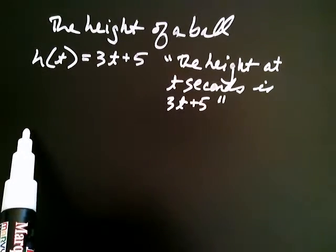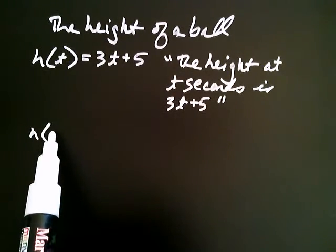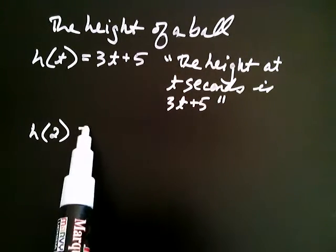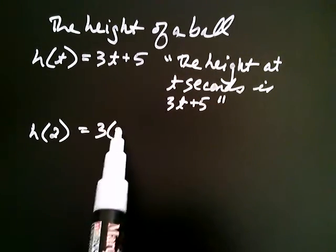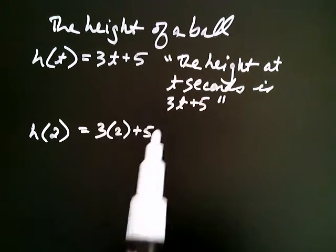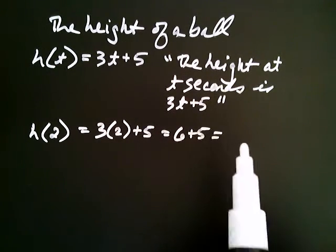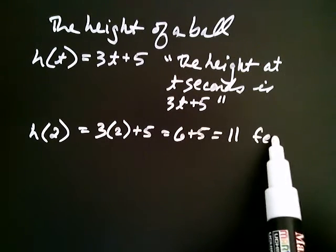The height at 2 seconds equals 3 times 2 plus 5. And that's equal to 6 plus 5, which is 11. Maybe 11 feet in this case.